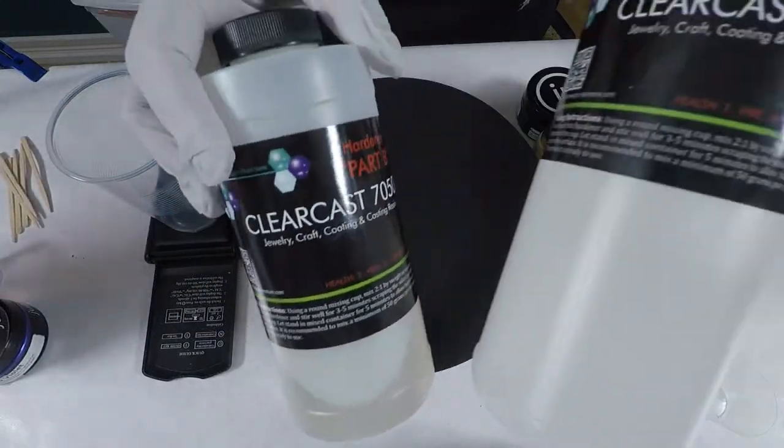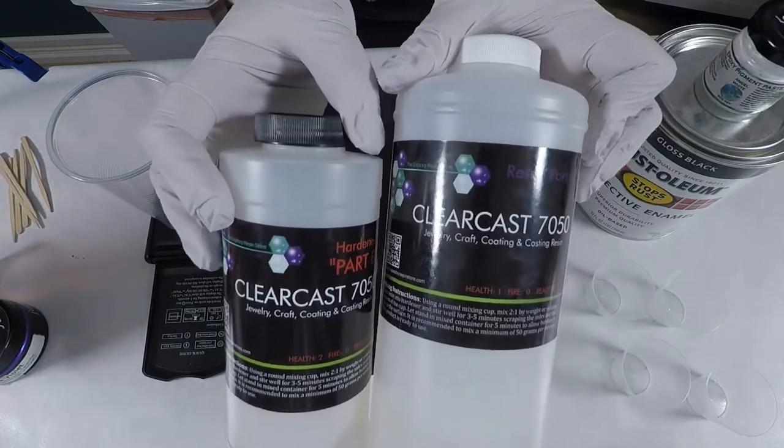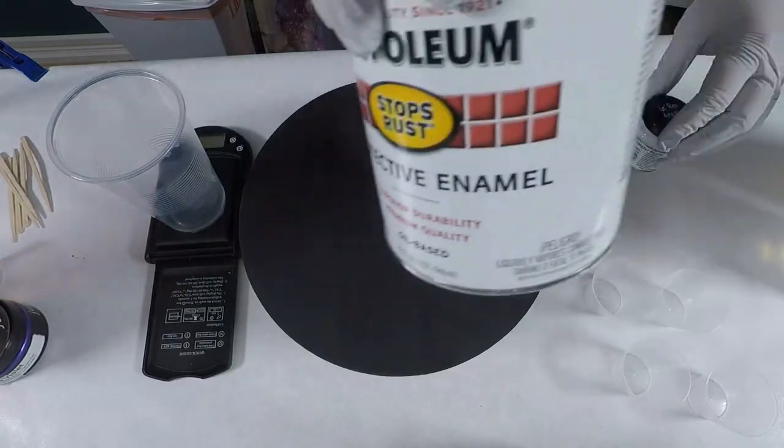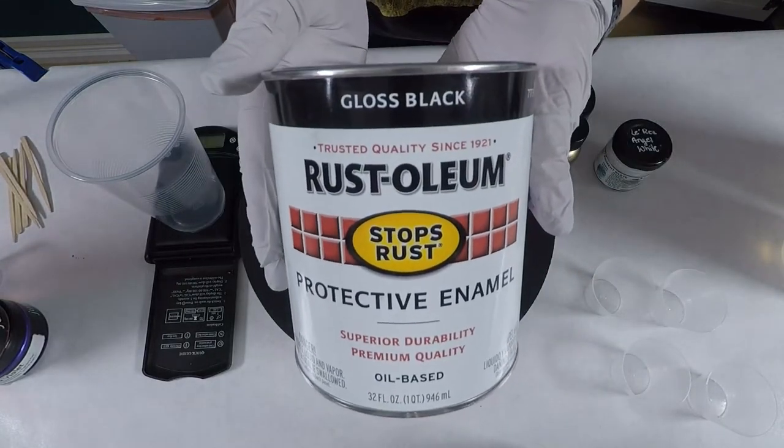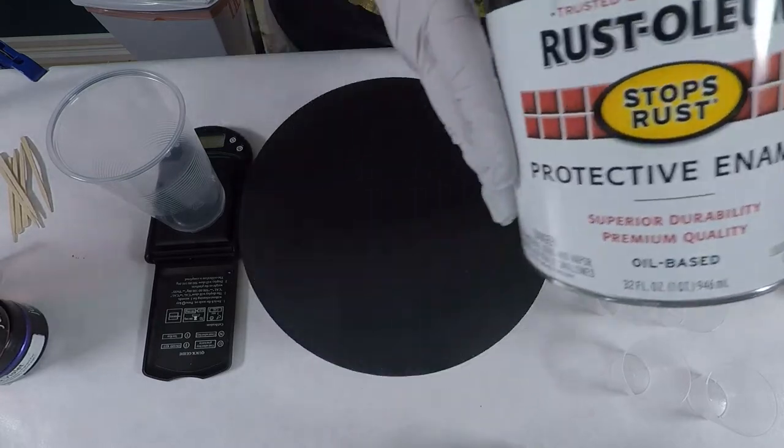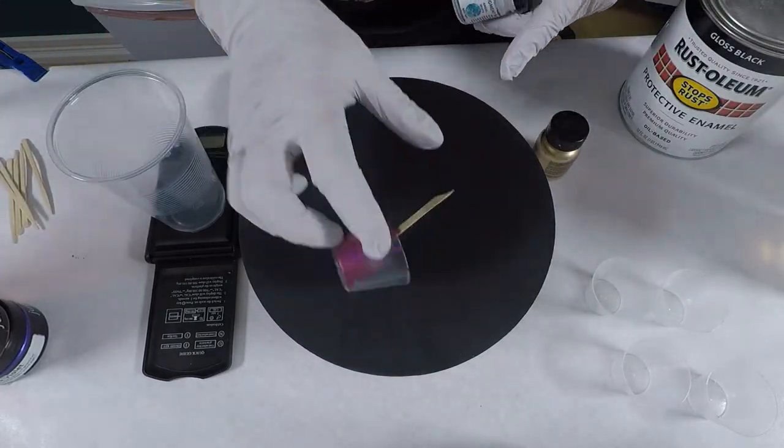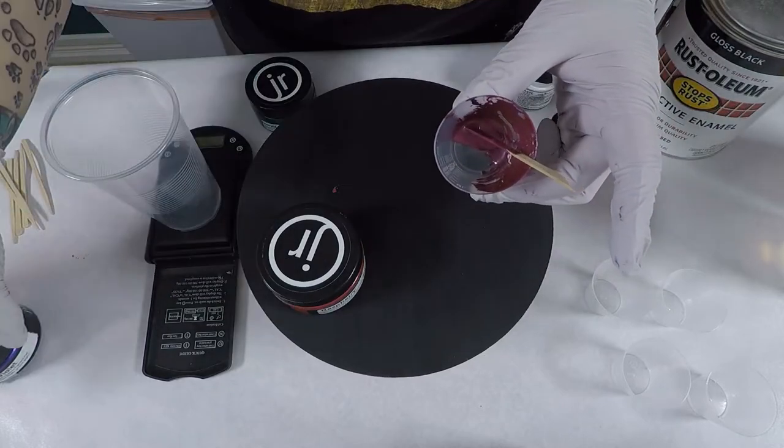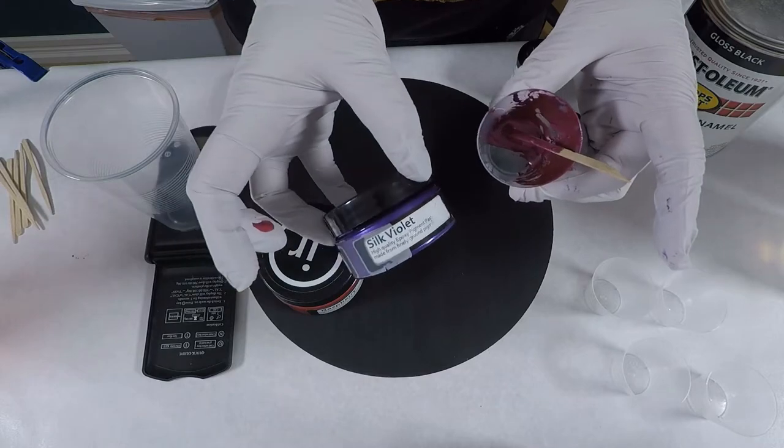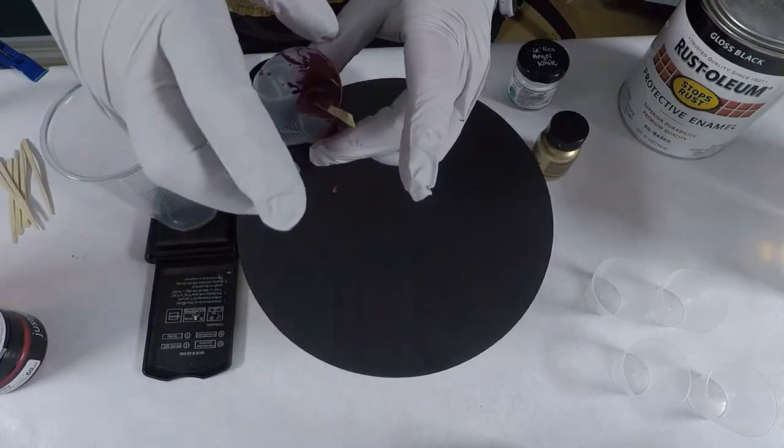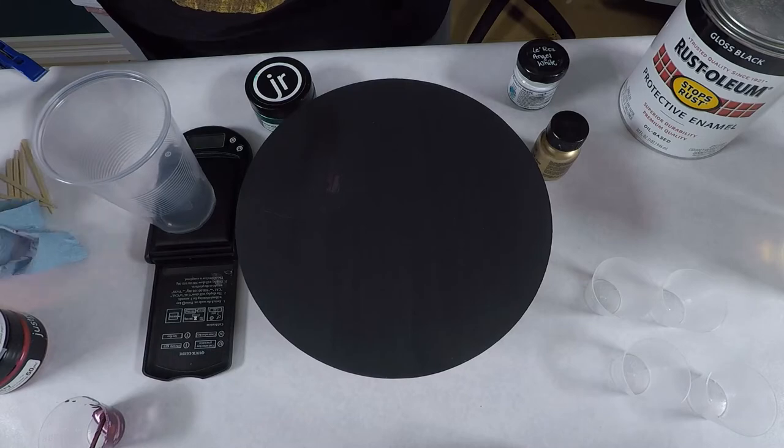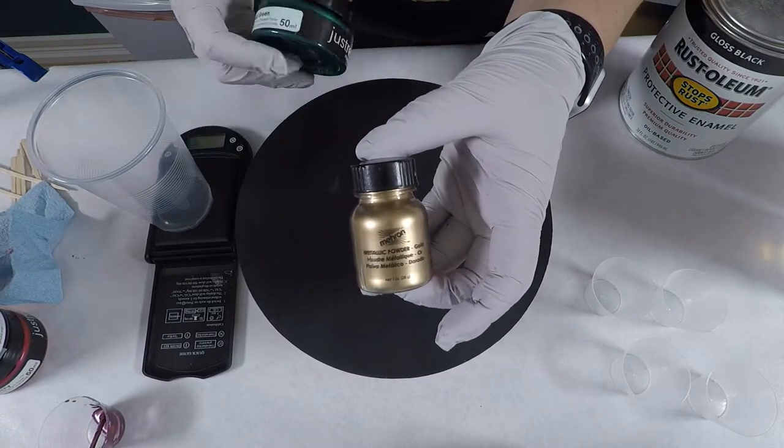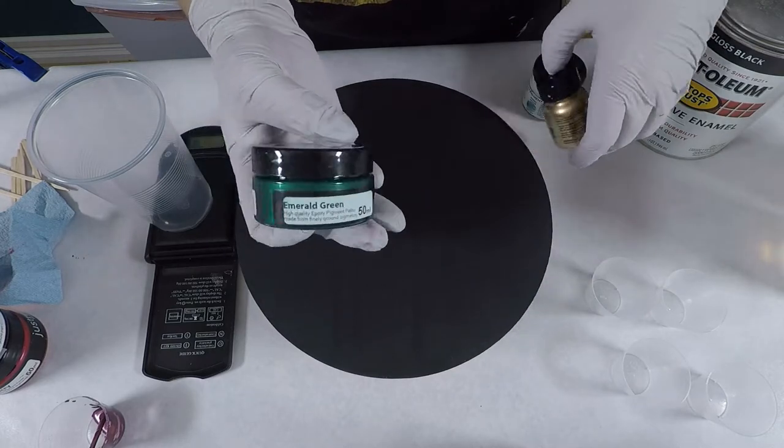And I'm going to be using the ClearCast 7050. I've gotten this from the Epoxy Resin Store, and there's coupons down below for that. For the black, I'm using the Rust-Oleum Gloss Black Protective Enamel. And I also made my own color using some Just Resin Raspberry and Silk Violet. So that's what is in this cup that I'm making a mess with. And then I'm also going to use some Lorez Angel White and Mehron Metallic Powder Gold and some Just Resin Emerald Green.